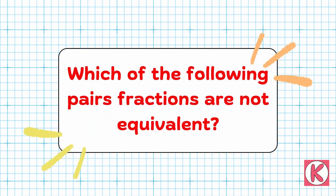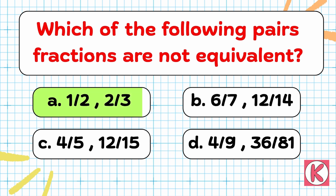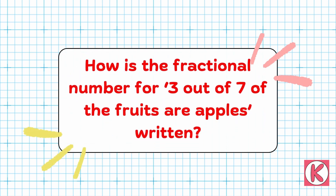Next question. Which of the following pairs of fractions are not equivalent? Right answer: Option A — 1 by 2 and 2 by 3.